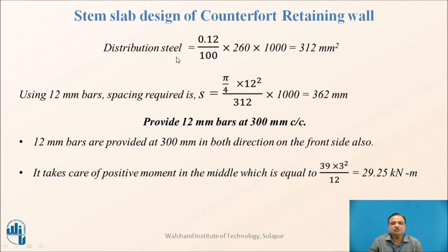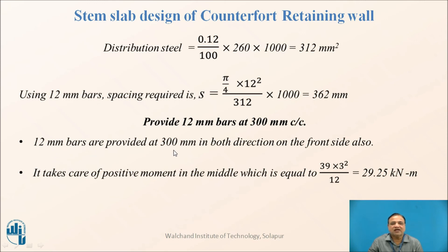Distribution steel is 0.12% of the area of cross section, that is 0.12/100 × 260 × 1000 = 312 mm². Using 12 mm diameter bars, spacing required = (area of 1 bar × 1000) / 312 = 362 mm. Therefore provide 12 mm diameter bars at 300 mm c/c. These 12 mm bars at 300 c/c are provided in both directions on the front side as minimum steel, also taking care of the positive moment at mid-span.